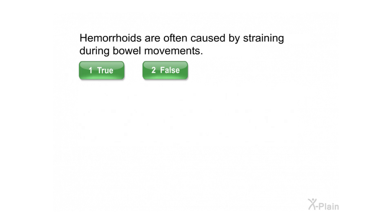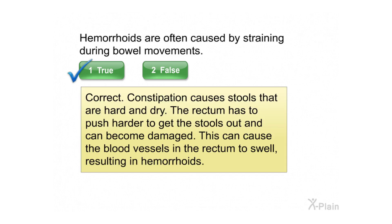Hemorrhoids are often caused by straining during bowel movements. Select true or false. Correct. Constipation causes stools that are hard and dry. The rectum has to push harder to get the stools out and can become damaged. This can cause the blood vessels in the rectum to swell, resulting in hemorrhoids.